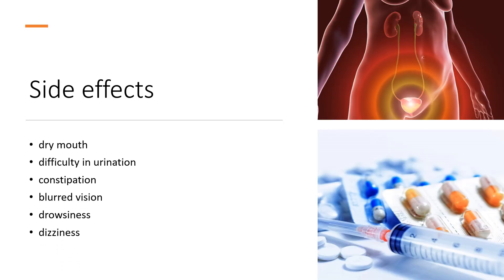Side Effects: Common adverse effects associated with oxybutynin and other anticholinergics include dry mouth, difficulty in urination, constipation, blurred vision, drowsiness, and dizziness. Anticholinergics have also been known to induce delirium.